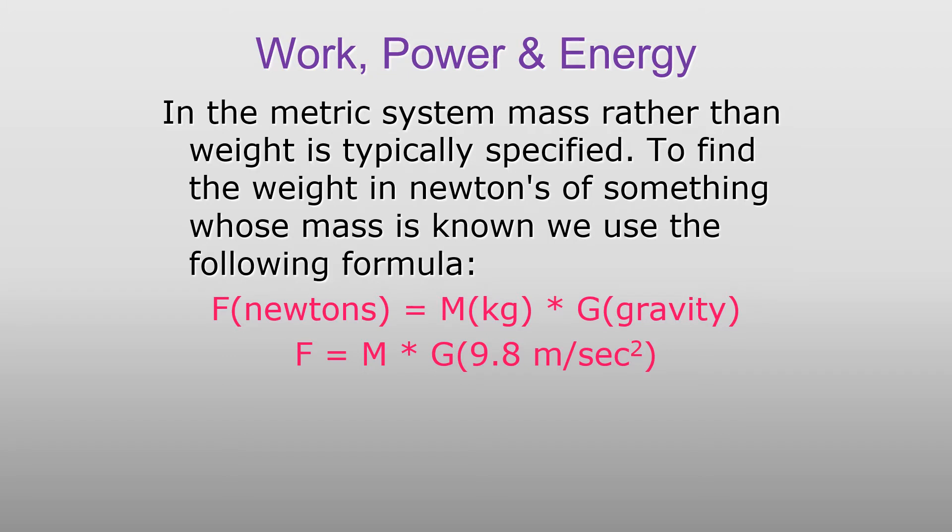In the metric system, mass rather than weight is typically specified. To find the weight in Newtons of something whose mass is known, we use the following formula: Newtons equals mass in kilograms times the force due to gravity, where the force due to gravity is 9.8 meters per second squared.